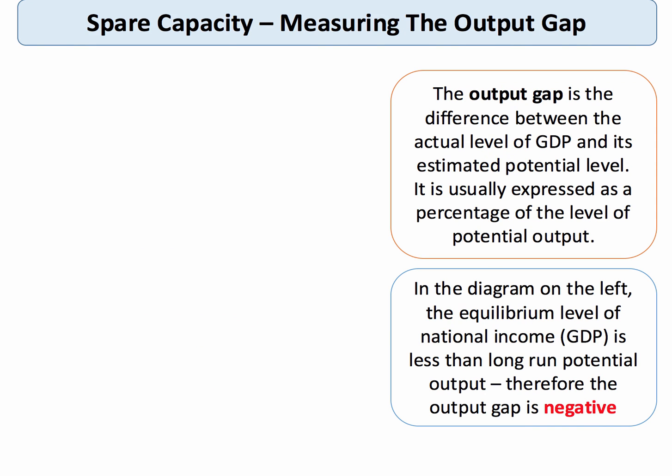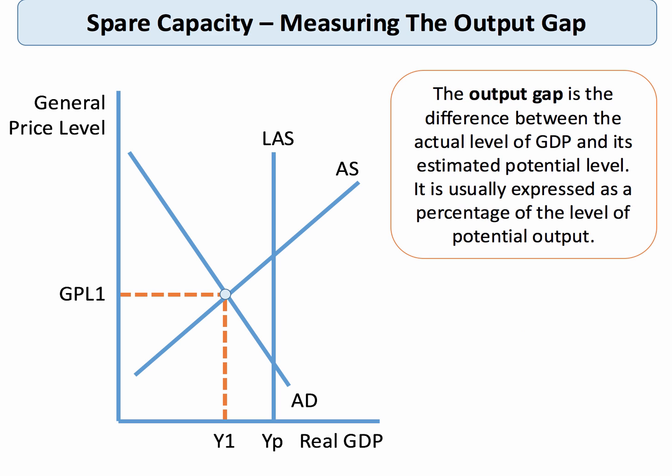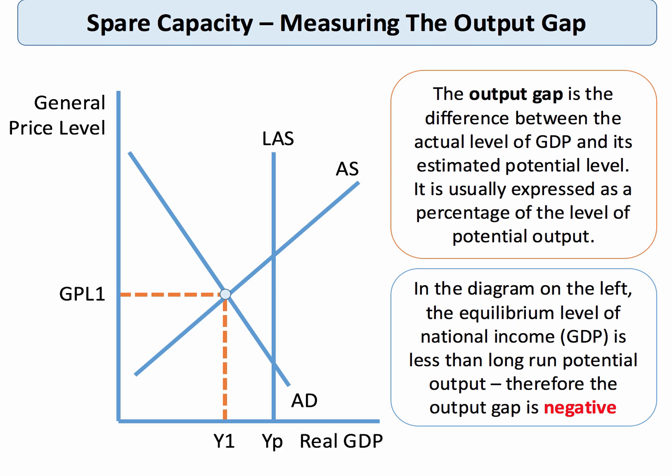The technical definition of the output gap is the difference between the actual level of GDP — the actual level of national output — and its estimated potential level. We normally express the output gap as a percentage of the level of potential output. In this aggregate demand and aggregate supply diagram, the level of GDP Y1 at the equilibrium is to the left of YP, the level of potential national output. So in this sense the economy is operating with a negative output gap — there are underutilized factors of production. If the level of GDP Y1 is less than YP, we say that the output gap is negative.